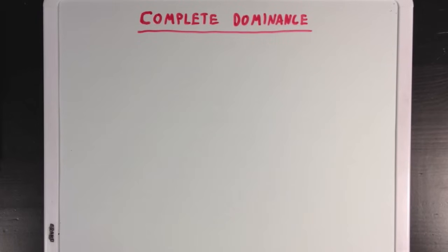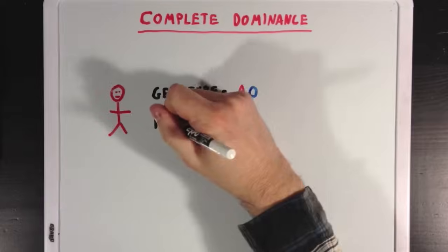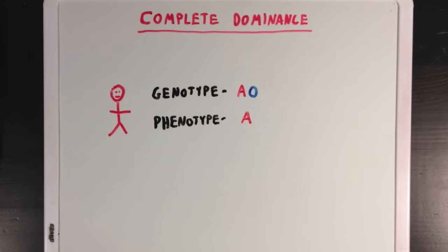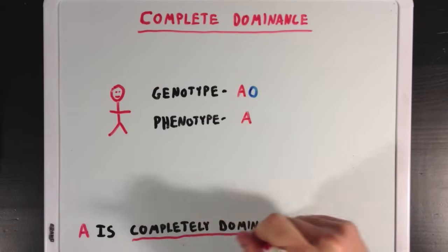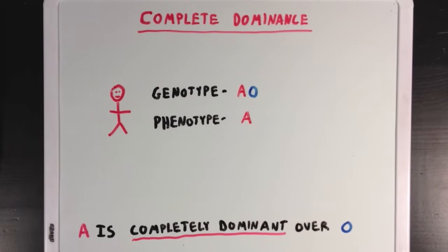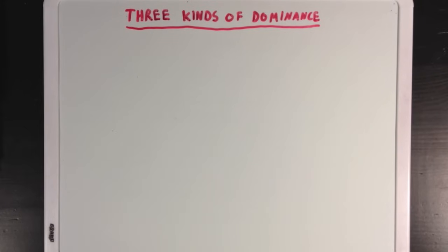That example was an example of complete dominance. If a person had the genotype AO, since the phenotype is just blood type A, it means the A allele is completely dominant over the O allele, and only the A allele is expressed in the phenotype. But there are actually three different patterns of dominance to be familiar with.